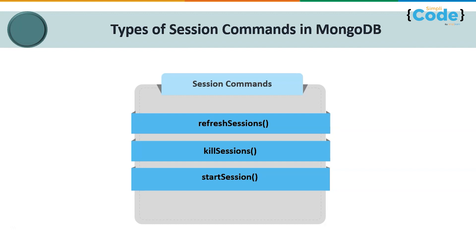The kill sessions command is used to exit or terminate only a particular specified session for a user. Finally, the start session command starts a new logical session in the MongoDB database. The constraint here is that you must be authenticated to run this command — proper authentication must be given to the MongoDB database. If the deployment does not enforce authentication or authorization, a created session has no owner and can be used by any user over any connection.